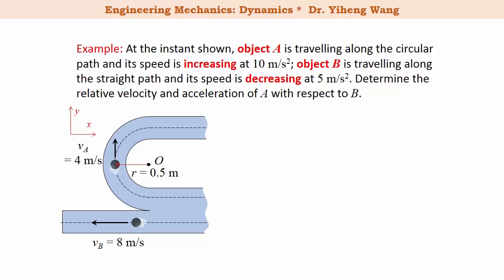For acceleration, don't forget object A is doing curvilinear motion, therefore it has two acceleration components: the tangential acceleration a_t, and the normal acceleration a_n, which always points towards the center of curvature. Since we know that the speed of A is increasing at 10 m per second squared, and that is the tangential acceleration, because the tangential acceleration equals to dv/dt in scalar form, and it describes the change in speed. So a_At is simply 10j m per second squared.